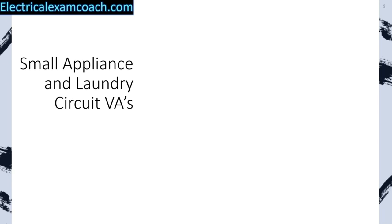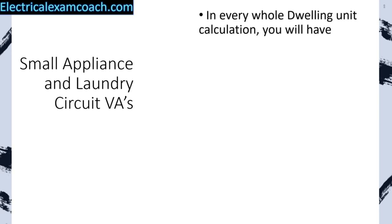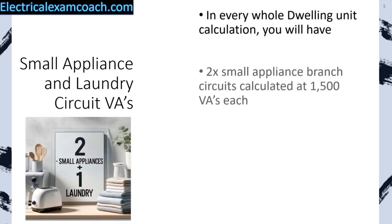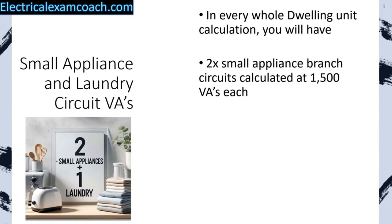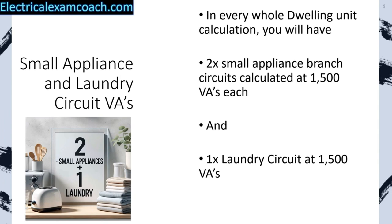Now that we've learned about our 3 VAs per square foot, we have to learn about what's called our small appliance and laundry circuit VAs. In every whole-dwelling-unit calculation, we're going to have 2 small appliance branch circuits calculated at 1,500 VAs each, and one laundry circuit calculated at 1,500 VAs each — for a total of 4,500 VAs. We only add this on to the general lighting load and receptacles before demand factors when doing a whole-house load calc. We are not going to add it on to something like an individual dryer or range — those are calculated individually.